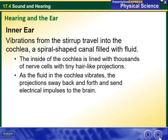In the inner ear, vibrations from the stirrup travel into the cochlea, a spiral-shaped canal filled with fluid. Inside, the cochlea is lined with thousands of nerve cells with tiny hair-like projections. As the fluid in the cochlea vibrates, the projections sway back and forth and send electrical impulses to the brain.